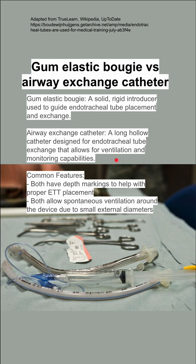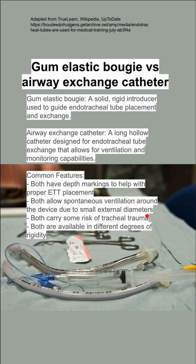They both allow for spontaneous ventilation around the device because they have very small external diameters compared to the endotracheal tube, which makes sense because you want the endotracheal tube to be able to slide over it. They both carry some risk of tracheal trauma, just like any procedure in the airway, and they're both available in different degrees of rigidity — some are more bendable, some less.